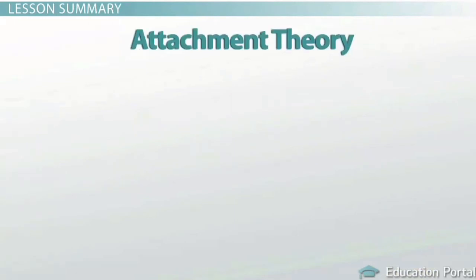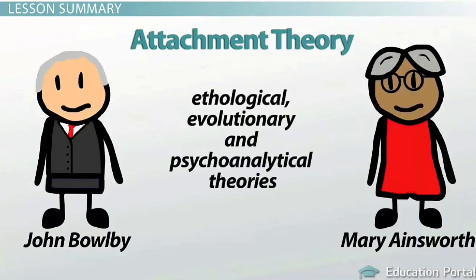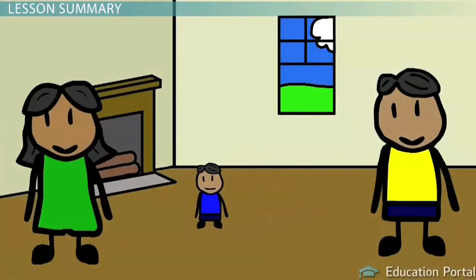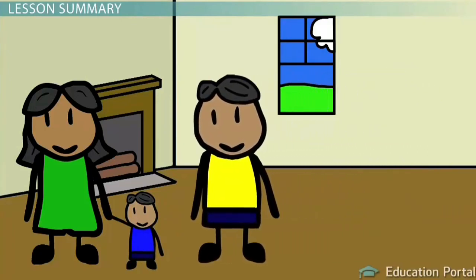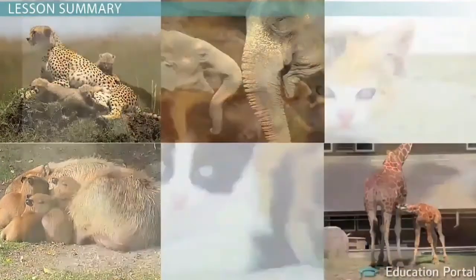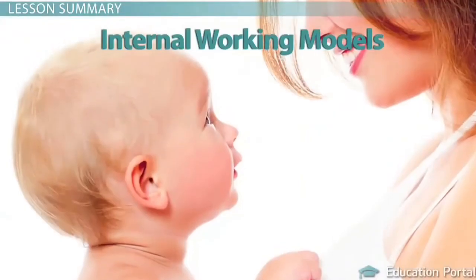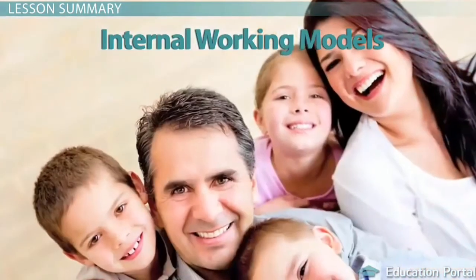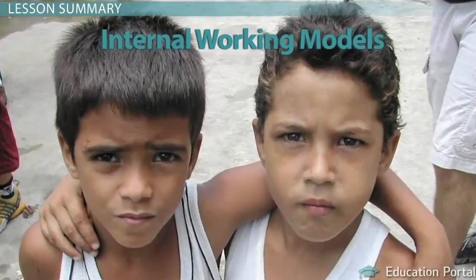In summary, attachment theory was developed by Bowlby and elaborated by Ainsworth, and is based on ethological, evolutionary, and psychoanalytical theories and research. These researchers indicated that attachments unfold through an interaction of biological and environmental forces during a sensitive period early in life — within the first three years. The first attachment relationship, the one between infant and parent or caregiver, shapes later development and the quality of later relationships. Finally, internal working models of self and others, formed via early life attachments, provide the foundation for relationships through one's lifetime.